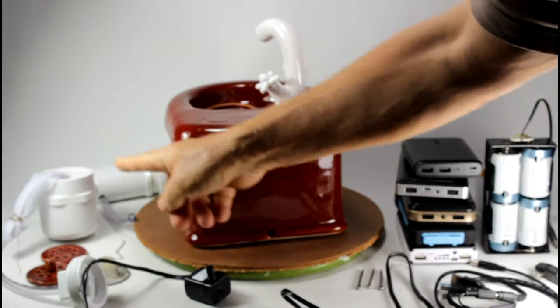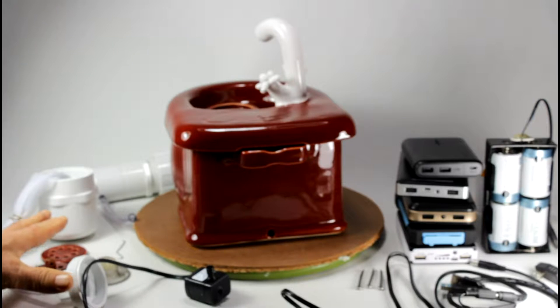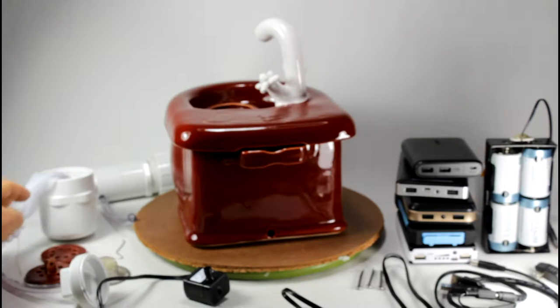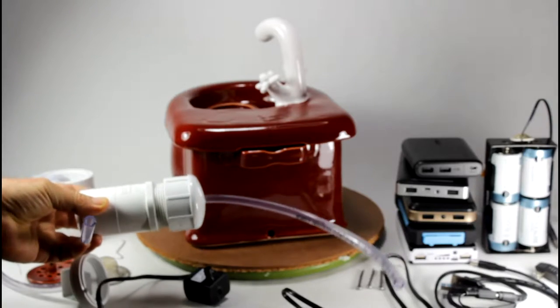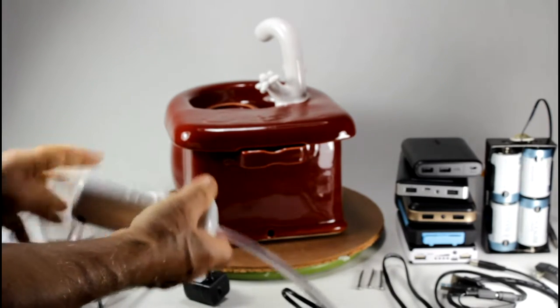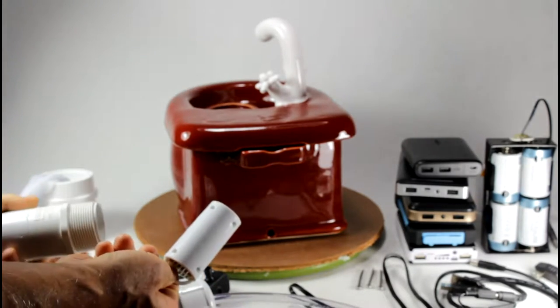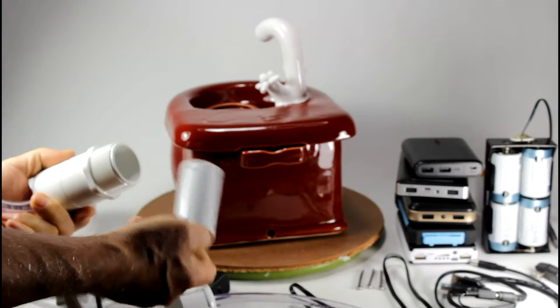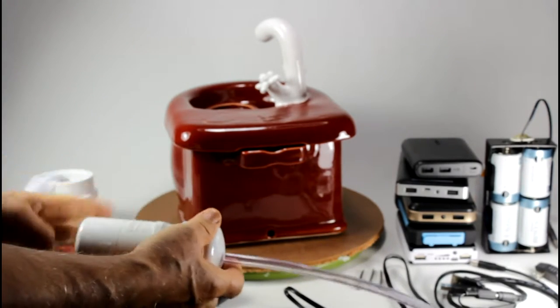So here on the other side we have the filters. I offer two different types of filters. One type is the Drinkwell, it's a Drinkwell filter system with a Drinkwell 360 cartridge inside. It's the easiest way, you just exchange the cartridge and put a new one in every two to three weeks and you are ready to go.